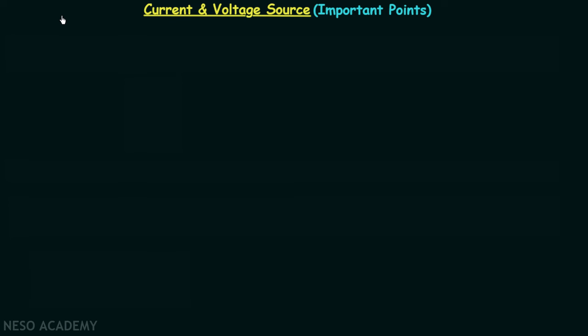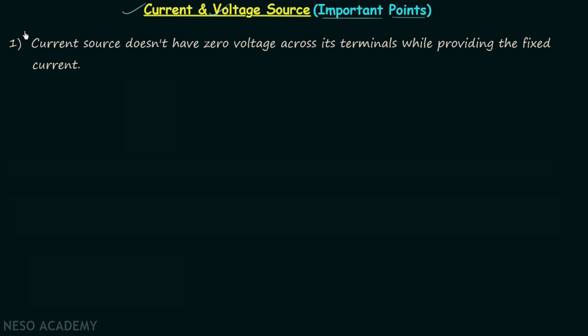In this lecture we are going to have discussion on some important points related to the current source and to the voltage source. According to the first point, current source does not have zero voltage across its terminals while providing the fixed current.